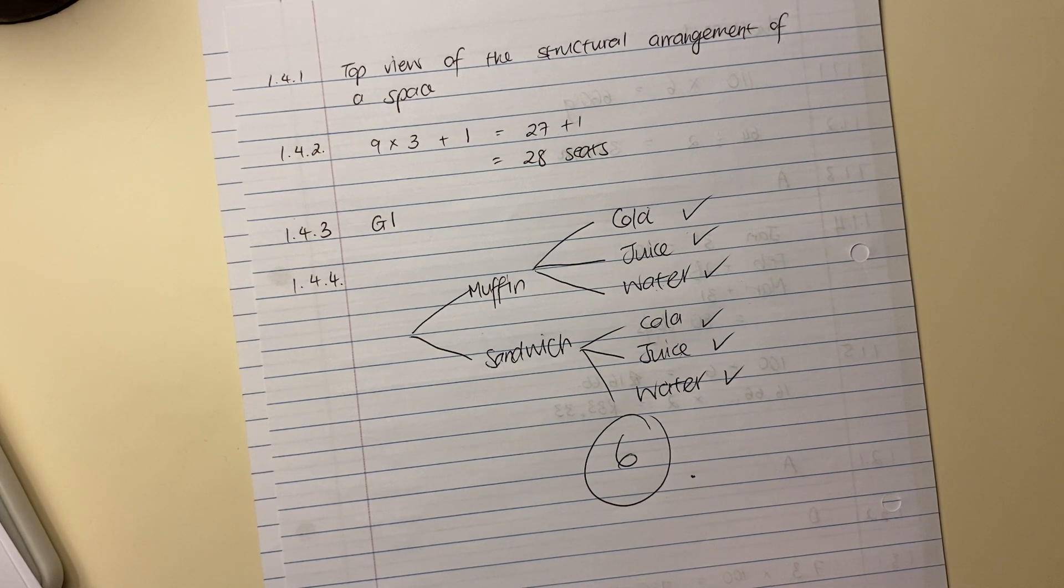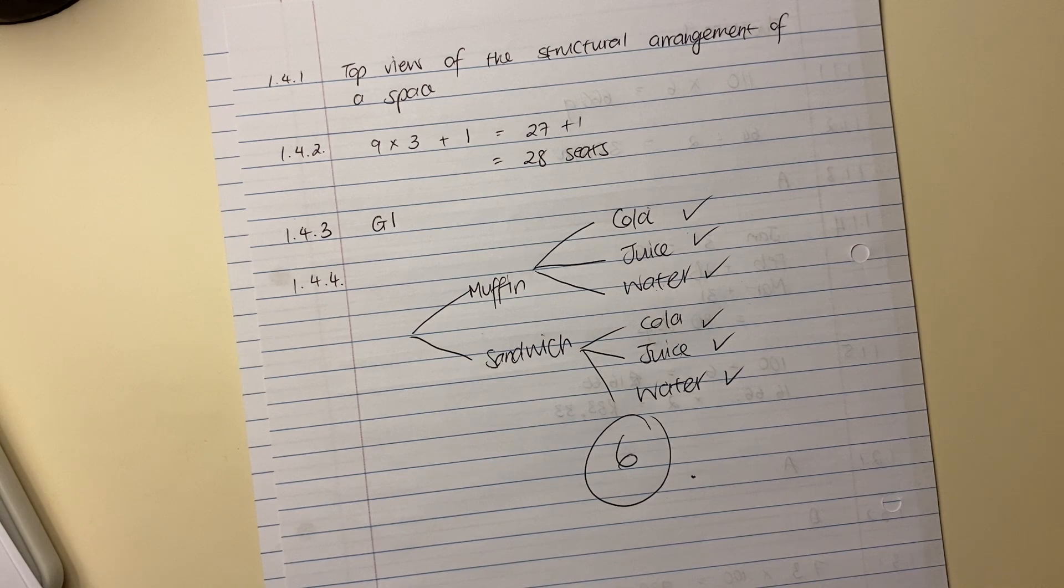And it is six options. I wouldn't advise you circling it like I did, but that is the answer. Okay, that's us done for question one. We'll move into question two in the next video.